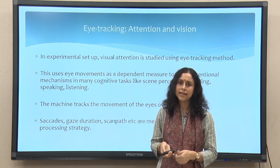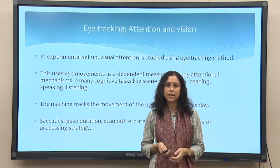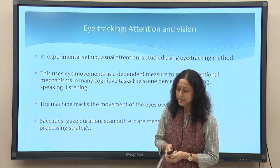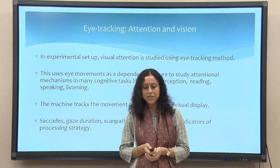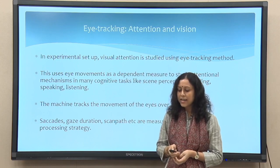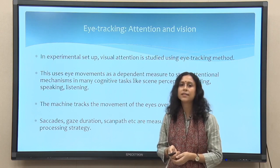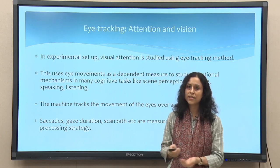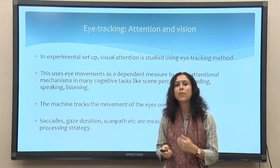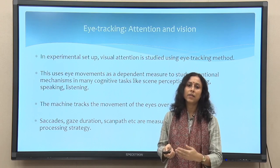Most of these studies today use eye tracking as a mechanism to provide data for understanding the interaction between language and visual attention. Eye tracking is a machine, and there are different types — head-mounted eye trackers, fixed eye trackers, and so on. Basically, it is a machine that tracks the movement of our eyes as we look at any kind of display.